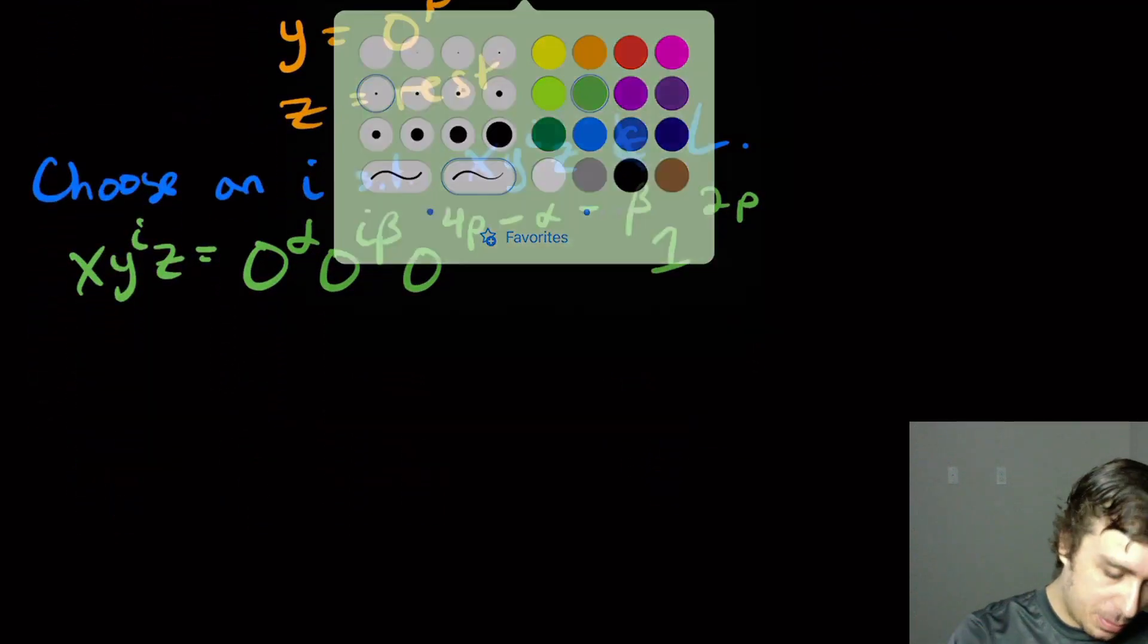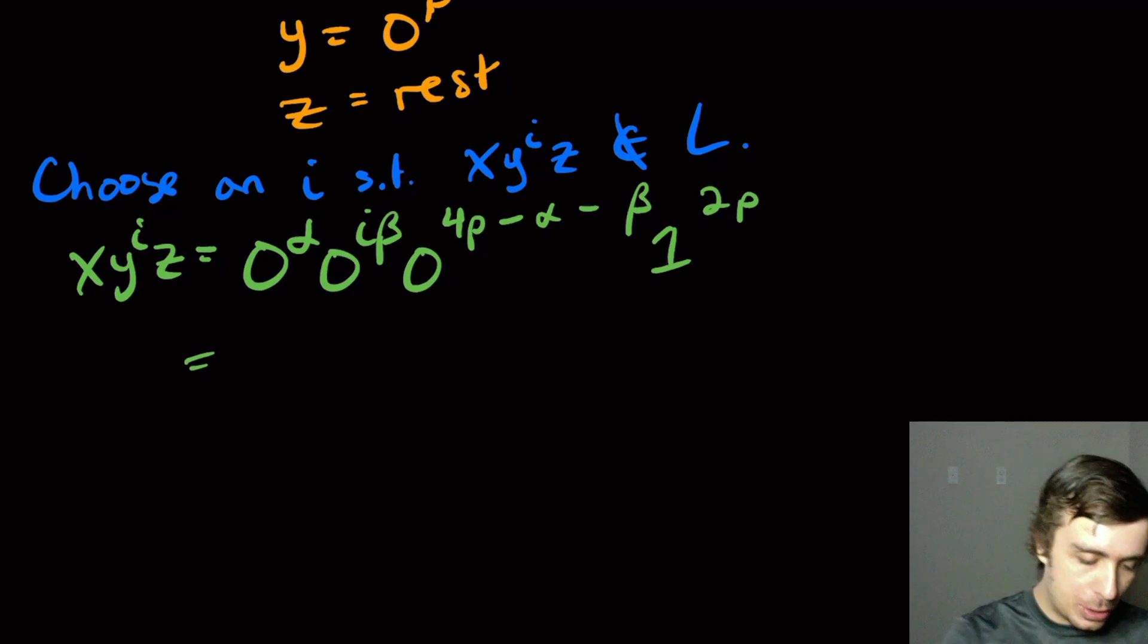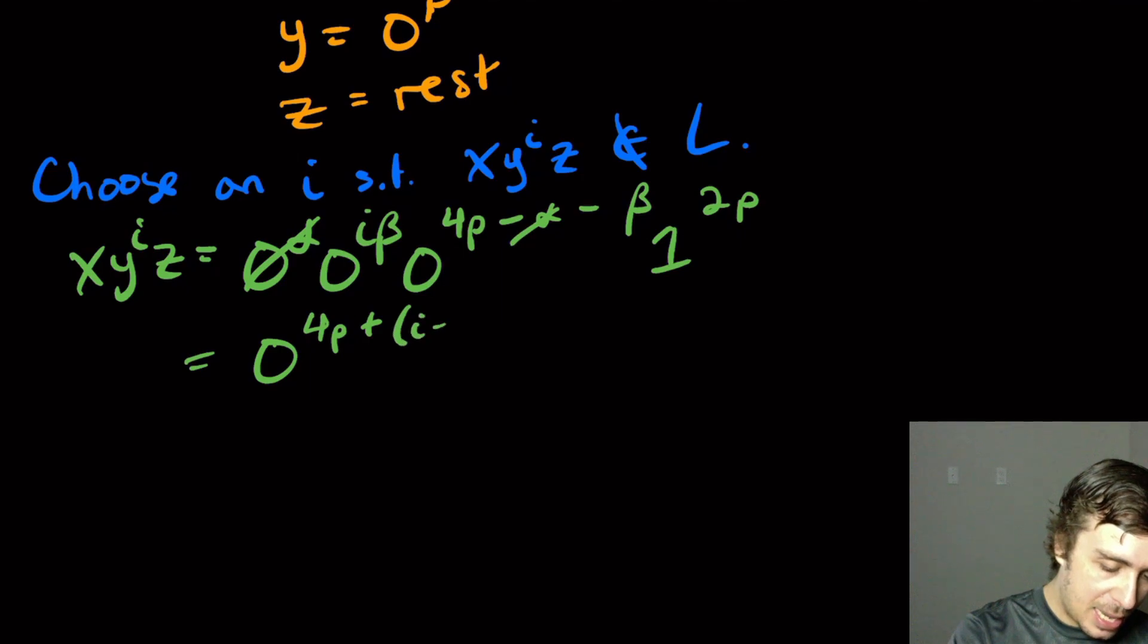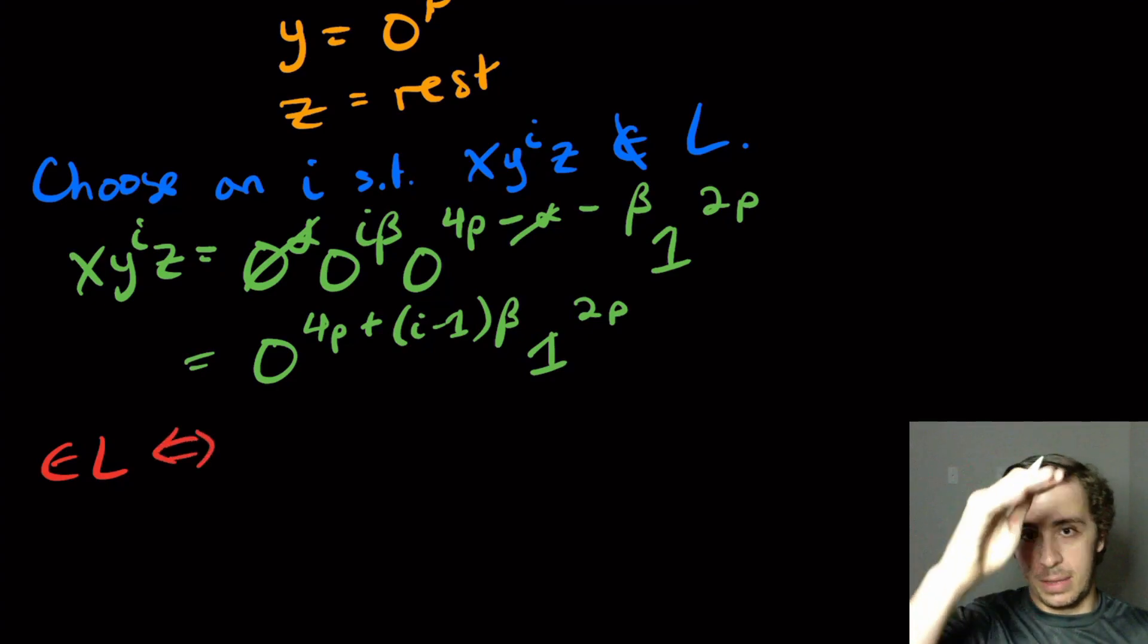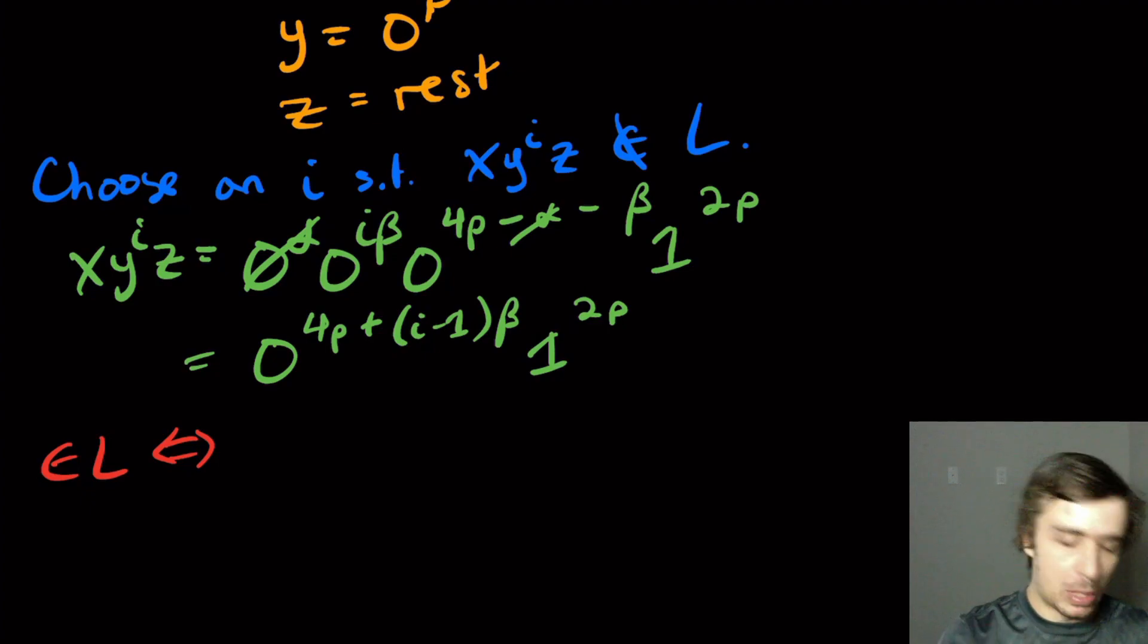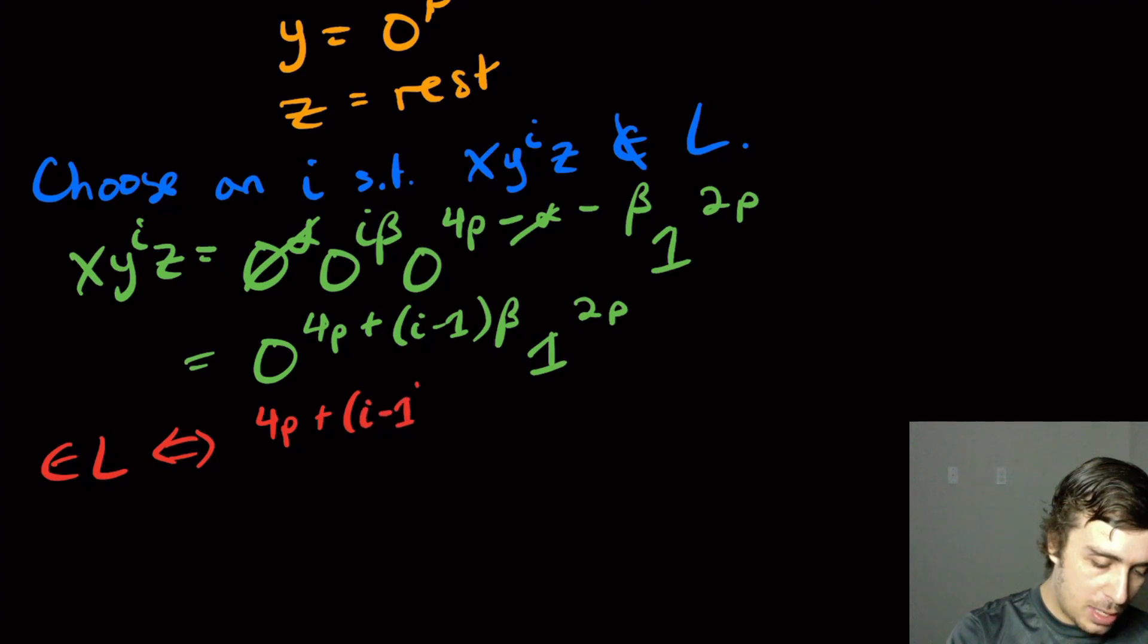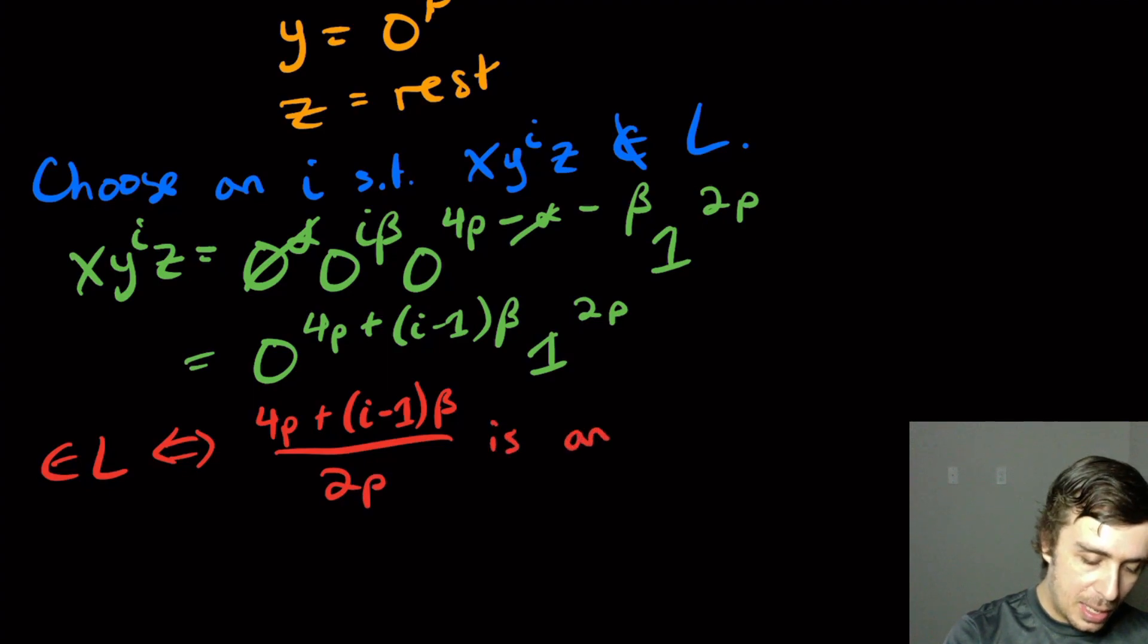So then let's shrink down all of the 0s here. So the alphas get killed off. So I'm going to have 4p plus i minus 1 times beta, because that's how many betas I have. And then 1 to the 2p. So it's very obvious that this thing is in the language, if and only if the number of 0s is a multiple of the number of 1s. So 4p plus i minus 1 times beta over 2p is an integer.